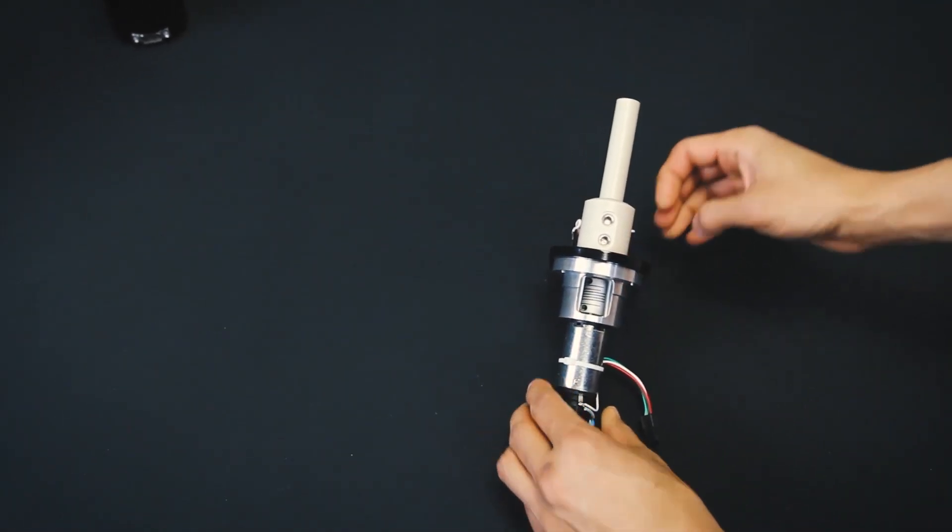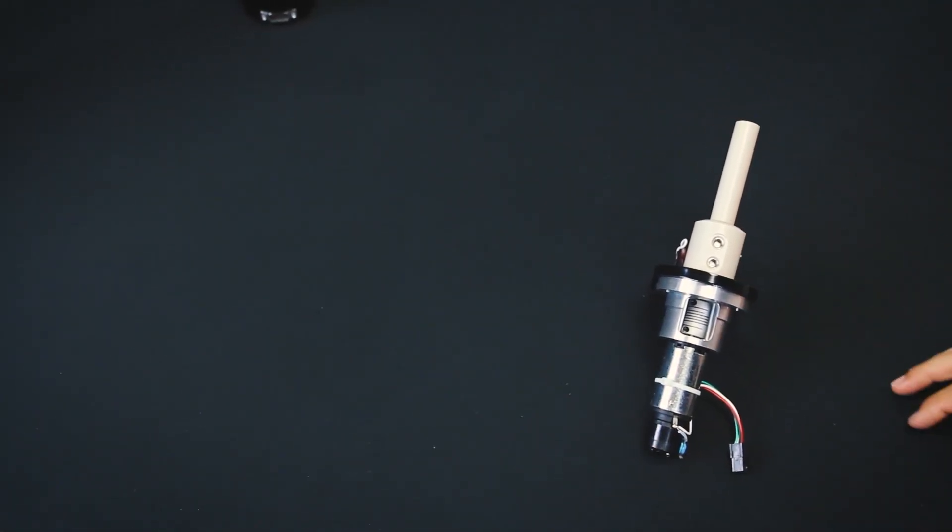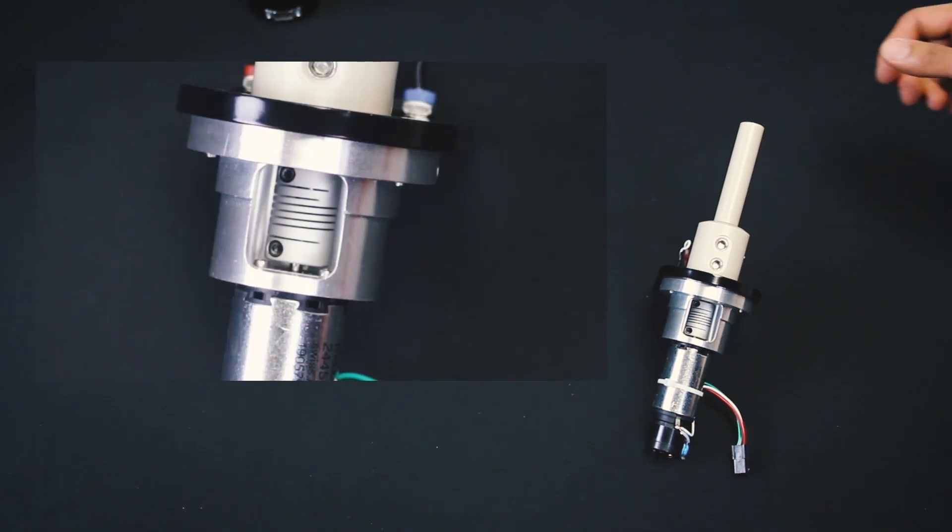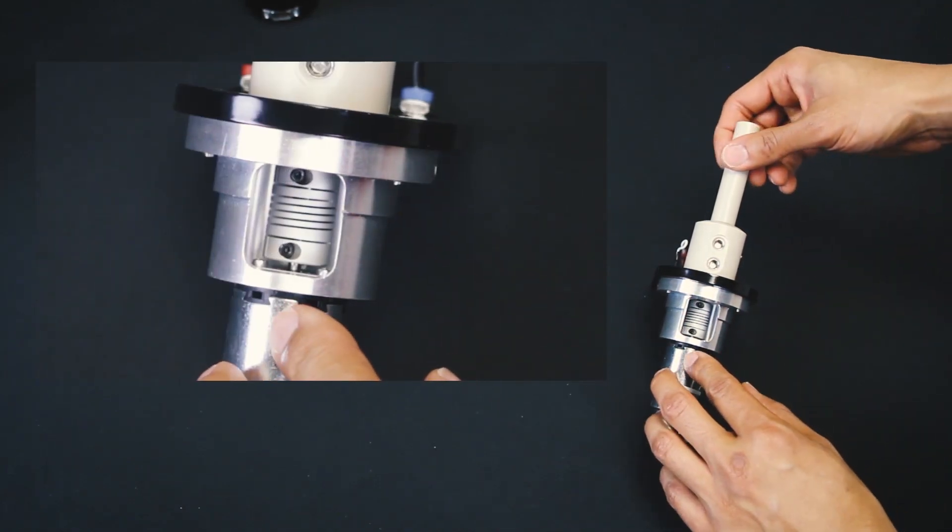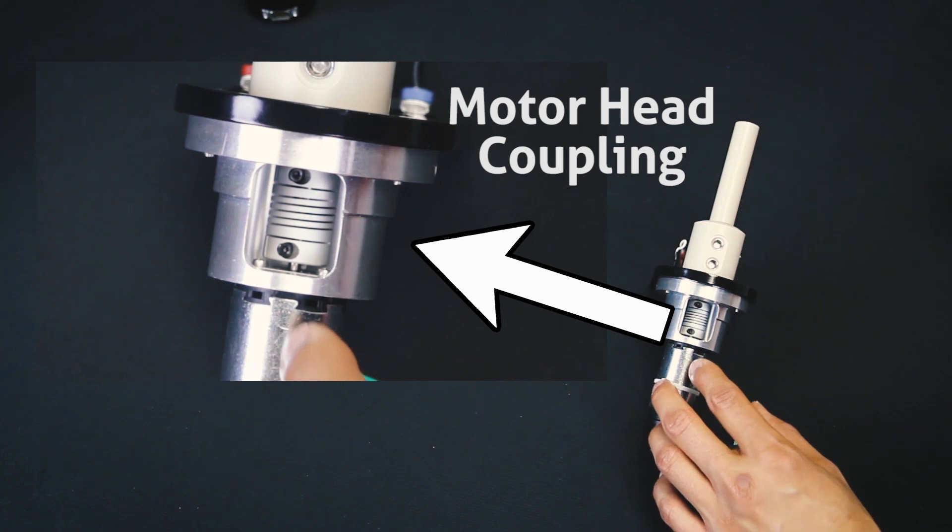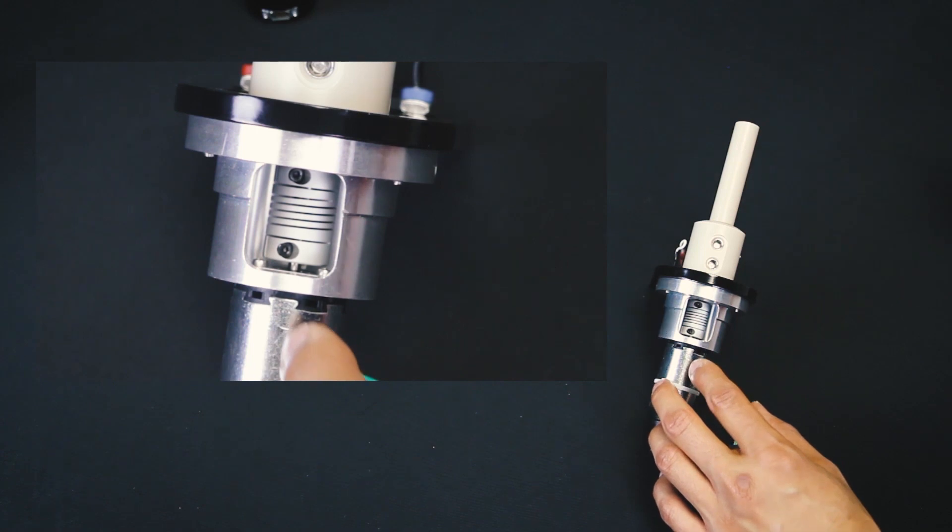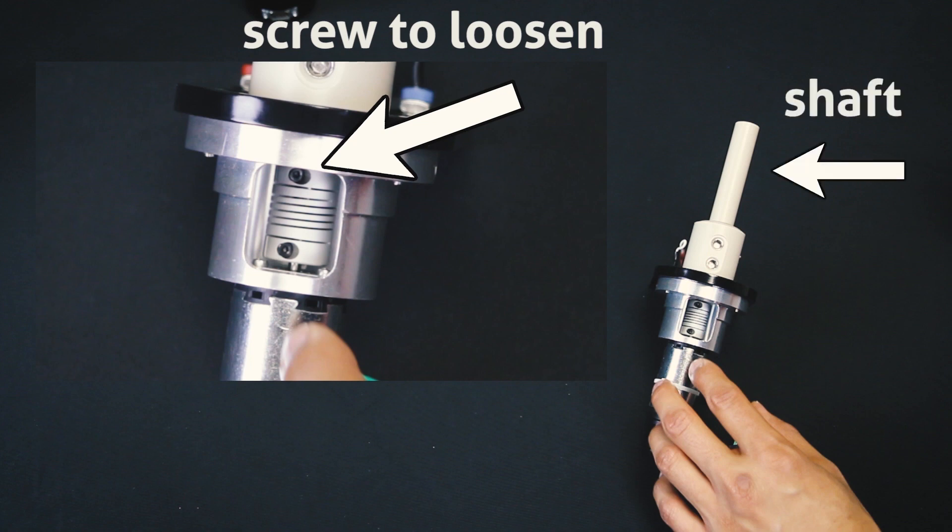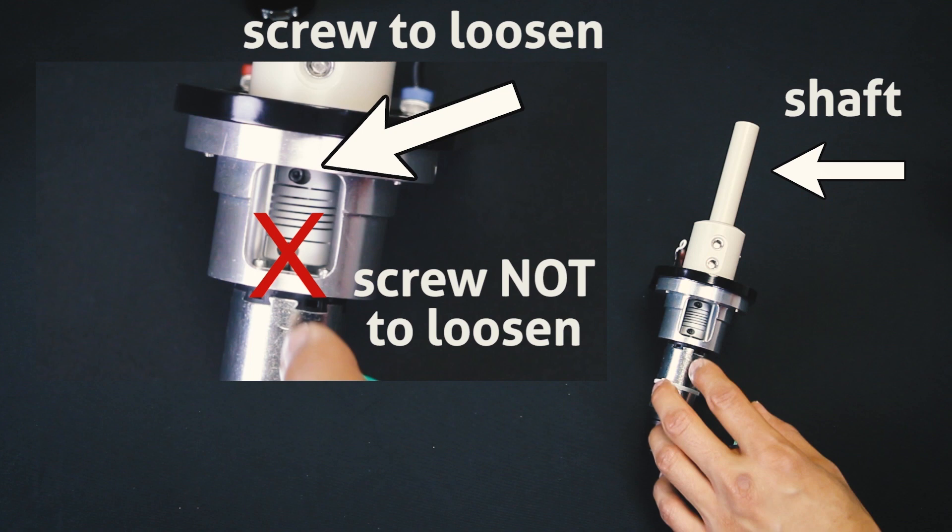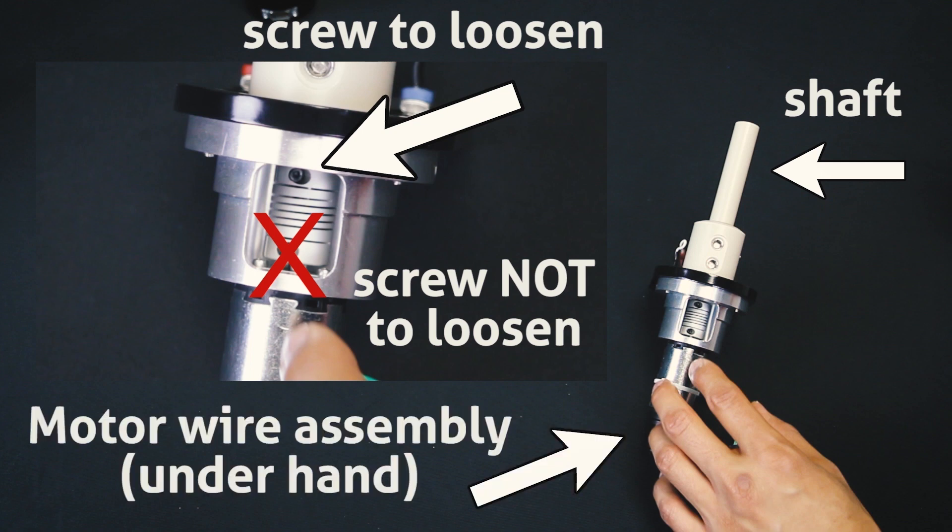Now we have the motor head. If you look here, there is a gap in the motor head where you will see the motor head coupling. The motor head coupling has two hex screws. Loosen the hex screw that is closer to the shaft using the 1/16th of an inch hex driver. Do not touch the hex screw that is closer to the motor wire assembly.